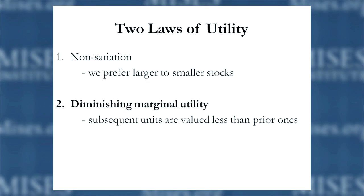The second law of utility is the law of diminishing marginal utility, one of the great contributions of the marginal revolution of 1871. The law says that for any given stock of goods, the value we place on each subsequent unit will be less than the one before it. Say you have four bottles of water in front of you. The first bottle you consume will satisfy your most pressing need — you're thirsty, and quenching thirst and staying hydrated is pretty important. So you pick up your first bottle, drink it, and that's a very highly valued end, because if you don't drink water, you die eventually.